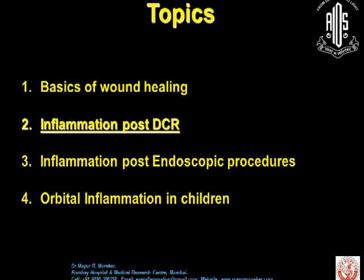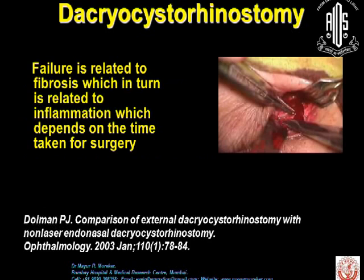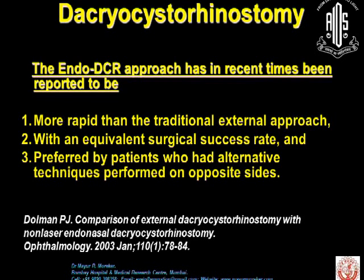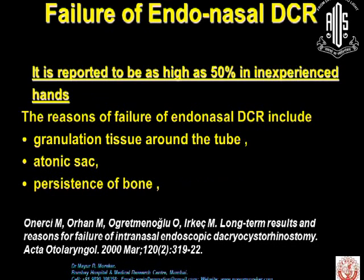Coming to inflammation post-DCR: failure here is related to fibrosis, which in turn is related to inflammation, which depends basically on the time taken for the surgery. The endoscopic DCR approach has been reported in recent times to be more rapid than the traditional external approach, with an equivalent surgical success rate. Failure of endoscopic DCR is reported to be as high as 50% in inexperienced hands, and the reasons for failure include granulation tissue around the tube, an atonic sac, and persistence of bone.